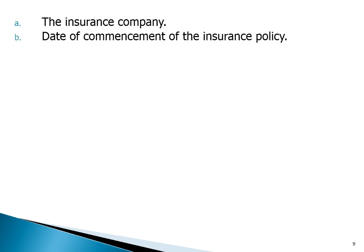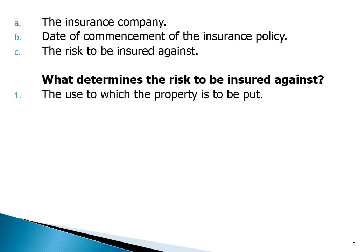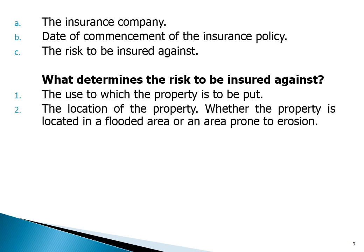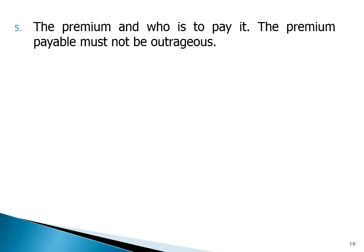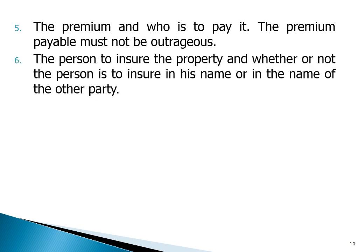The covenant to insure should specify: (a) the insurance company; (b) date of commencement of the insurance policy; (c) the risks to insure against. What determines the risks to insure against: one, the use to which the property is to be put; two, the location of the property — whether it is located in a flooded area or an area prone to erosion; three, the nature of the property itself — whether developed or not; four, applicable government policy; five, the premium and ways to pay it — the premium payable must not be outrageous; six, the person to insure the property and whether to insure in his name or in the name of the other party.